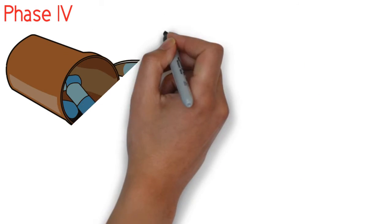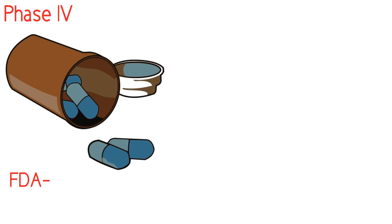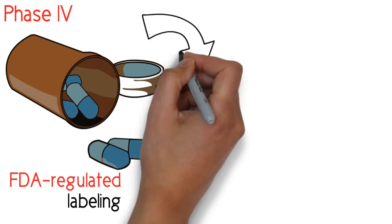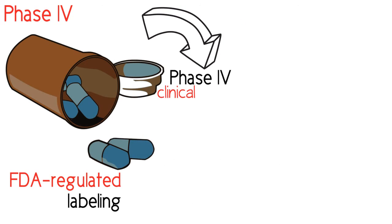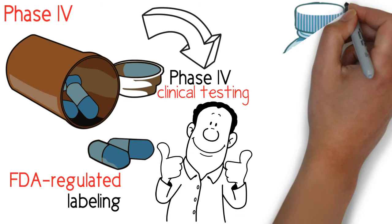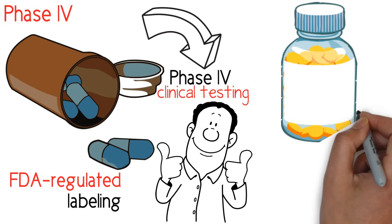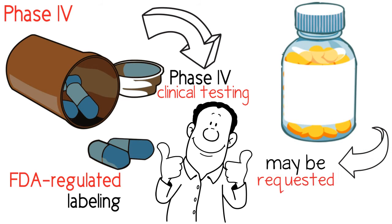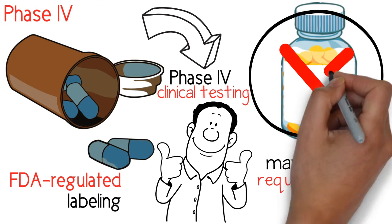Phase 4: Once the NDA is approved, the drug may be marketed with FDA-regulated labeling and may also extend into phase 4 clinical testing as the safety of the drug continues to be monitored. If rare but clinically important adverse events are reported, changes in labeling may be requested. If adverse events appear to be systematic and serious, the FDA may withdraw a product from the market.